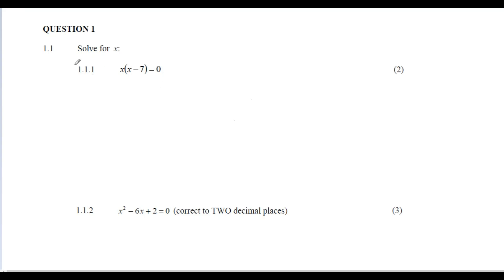First question: x(x - 7) = 0. The first thing I normally look at is mark allocation — two marks, easy. I'll do this for each question; we're tackling about four questions today. If you want to try it, pause the video, have a go, and let's see if you get it right.